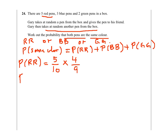For the probability of getting blue and blue: if Gary picks up a blue pen it will be 3 out of 10, since there are three blue pens. Once he gives it to his friend there are only two blue left out of nine, because he doesn't put it back into the box.